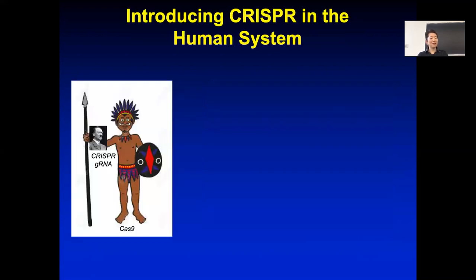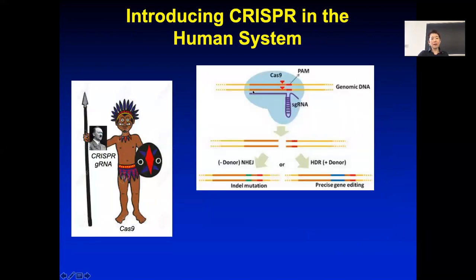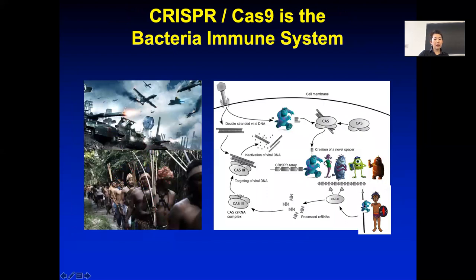Feng Zhang from the Broad Institute read about this and realized: if we can introduce this into human cells—basically introduce the bacterial protein into human cells and give it a guide RNA, like a photo—you can target it almost anywhere. What it needs is that the RNA sequence matches perfectly to the target sequence, and after the match, the target must be followed by an NGG sequence, called the PAM. That's also why the system doesn't cut the bacteria's own DNA: the bacteria doesn't have the NGG sequence at those stored positions, but the viral sequence does.